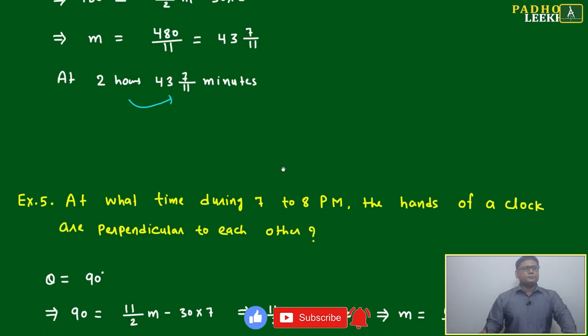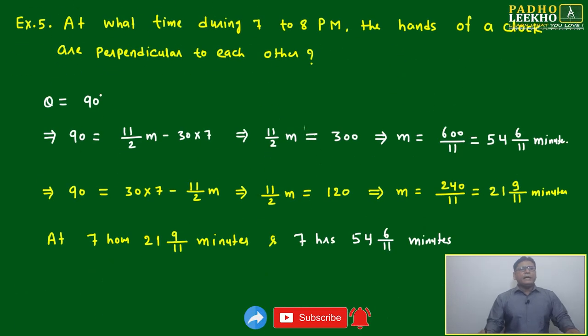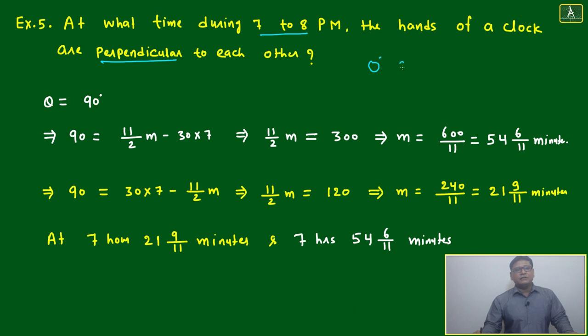Next example: at what time during 7 to 8 PM the hands of a clock are perpendicular to each other? We have seen zero degree, 90 degree, 180 degree.